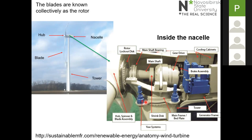The other components I want to highlight are the yaw drives — these allow the rotation of the nacelle about the tower axis so the turbine can be turned into the wind. On top of the nacelle there is an anemometer and a wind vane that give the wind speed and direction. If the rotor is not facing the wind, the yaw drive units are activated to turn the turbine into the wind.